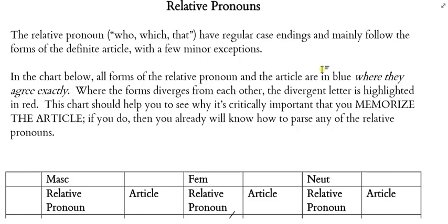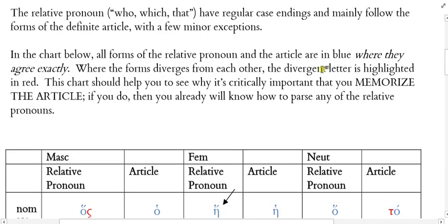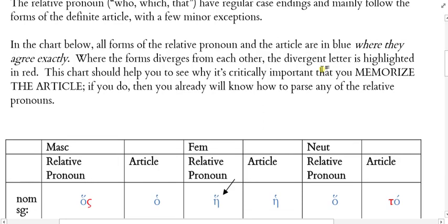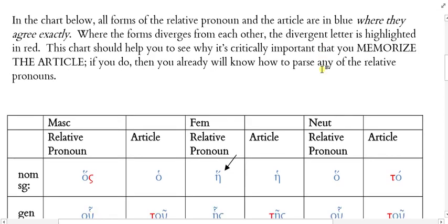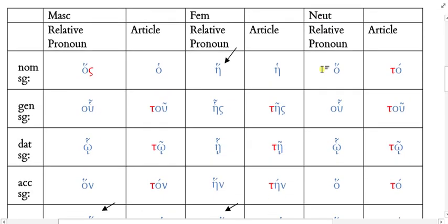Relative pronouns are pronouns, and therefore they have antecedents. The antecedent is going to determine the gender and number of the form of the relative pronoun. Relative pronouns also have a function inside their clause. For example, if I say 'this is the man who came to dinner,' who is the subject of came, so the form of who in Greek would have to be nominative. The case of the pronoun depends on the pronoun's function in the sentence. This is true of all pronouns in Greek.